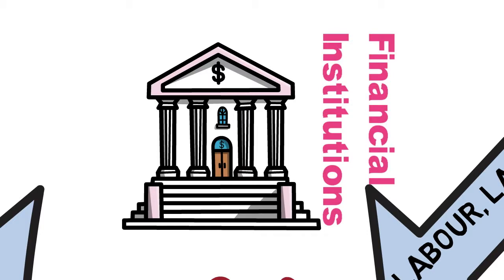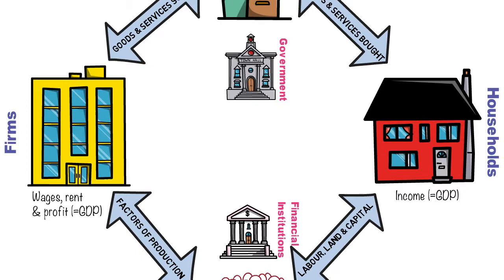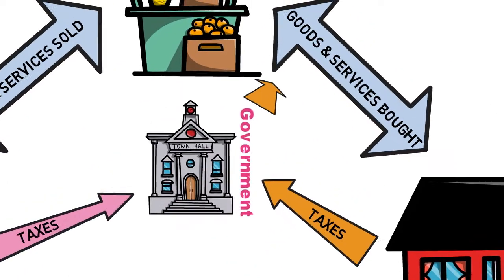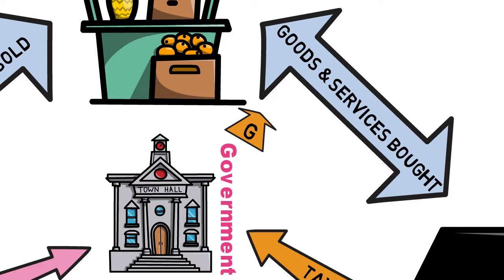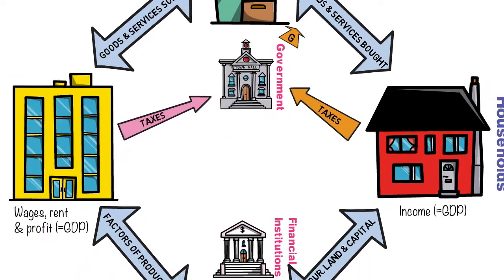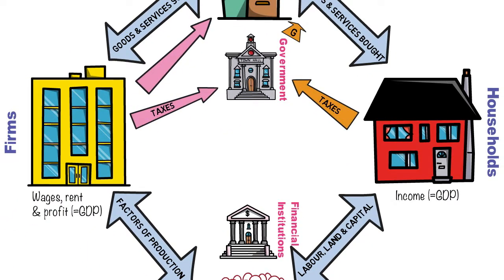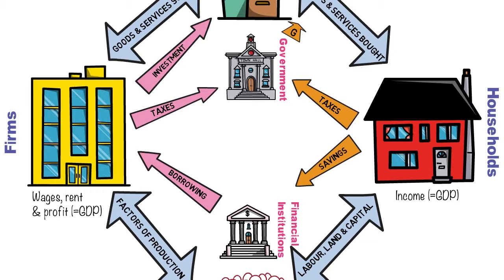We are also going to introduce financial institutions into the model, because we know these accept savings from households and issue loans to firms, households, and the government. The government takes taxes from firms in the form of corporate tax and also from households in the form of income tax and indirectly through VAT. After taking in taxes, that money leaks from the economy. The government also injects money into the economy through government spending — on roads, infrastructure, hospitals, etc. Firms also invest into their production process and get some of this money for investment from financial institutions through borrowing.